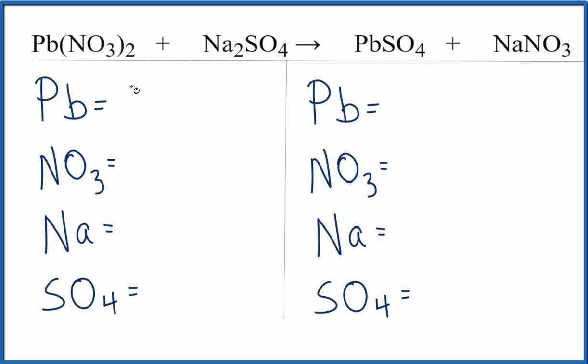So we have one lead atom, and then instead of writing the individual nitrogens and oxygens, I consider this whole NO3, this nitrate ion, to be one thing. So I have one of them here, but the two on the outside means I have two. So I have two NO3s.